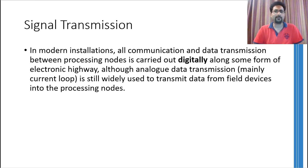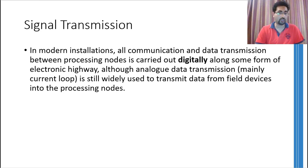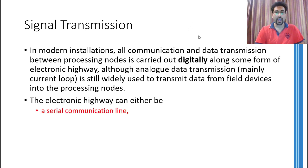You can relate this to how you talk differently with your friends, your teacher, or your parents — the communication protocols are different in each case. Similarly, for devices to communicate with each other, there are certain protocols. I will talk about these protocols in a bit, and I will discuss how analog and digital communication systems are still coexisting. But before that, let me discuss the electronic highway. Primarily, there are three highways: the serial communication line, the parallel bus, and the local area network.